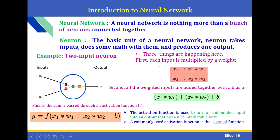Three things are happening in a neuron. First, each input is multiplied by a weight — represented as W. W1 is weight 1, W2 is weight 2. Each input has its own weight: X1 has weight W1, X2 has weight W2. Second, all the weighted inputs are added together with a bias, represented by the letter B.